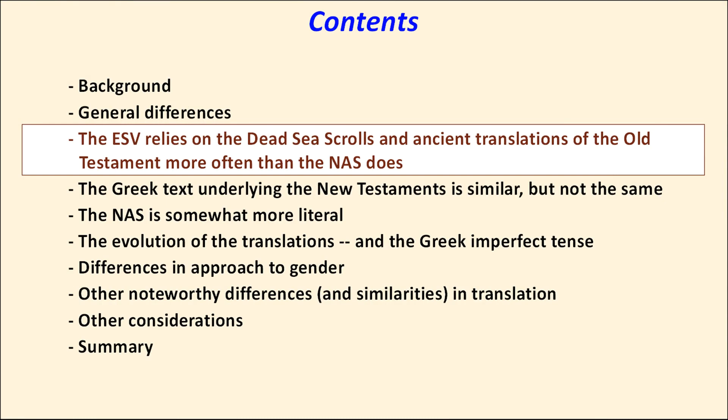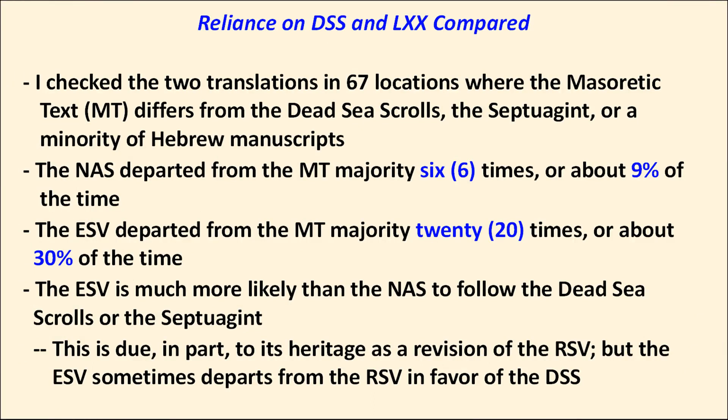Now we'll discuss the Old Testament textual basis of the two translations, comparing them to each other and occasionally to their predecessors, the ASV and RSV. The ESV relies on the Dead Sea Scrolls and ancient translations much more often than the NAS does. I examined both translations in 67 spots where the Masoretic text differs from the Dead Sea Scrolls or ancient versions: the NAS departed from the Masoretic 9% of the time, the ESV 30% of the time. Part of the difference is due to the RSV's influence on the ESV; some Dead Sea Scrolls usage in the ESV also reflects the initiative of the ESV translation team itself.